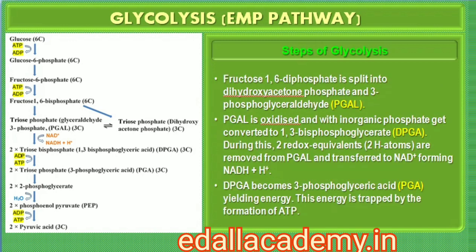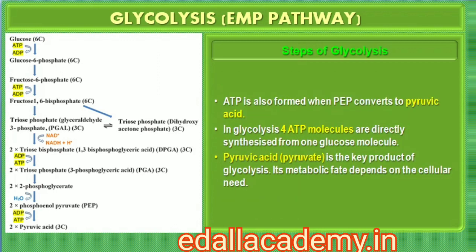Fructose 1,6-bisphosphate is split into dihydroxyacetone phosphate and 3-phosphoglyceraldehyde (PGAL). There is one step where NADH + H+ is formed from NAD+, when PGAL is converted to 1,3-bisphosphoglycerate (BPGA). Two redox equivalents are removed in the form of two hydrogen atoms from PGAL and transferred to a molecule of NAD+. The conversion of BPGA to 3-phosphoglyceric acid (PGA) is also an energy-yielding process, and this energy is trapped by the formation of ATP. Another ATP is synthesized during the conversion of phosphoenolpyruvate to pyruvic acid.